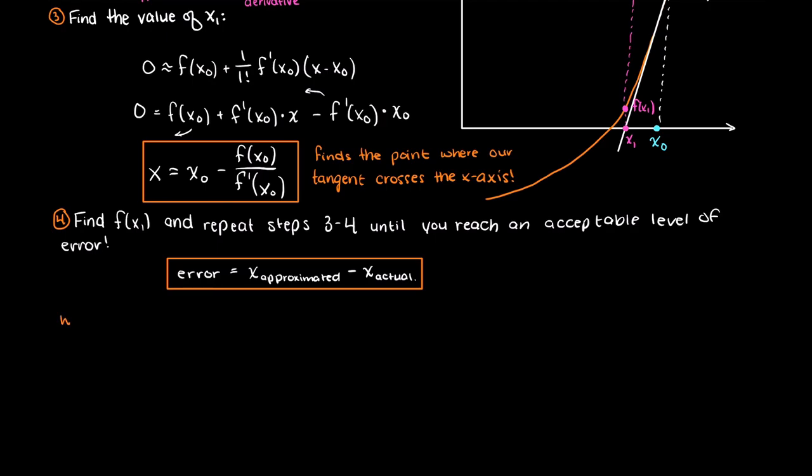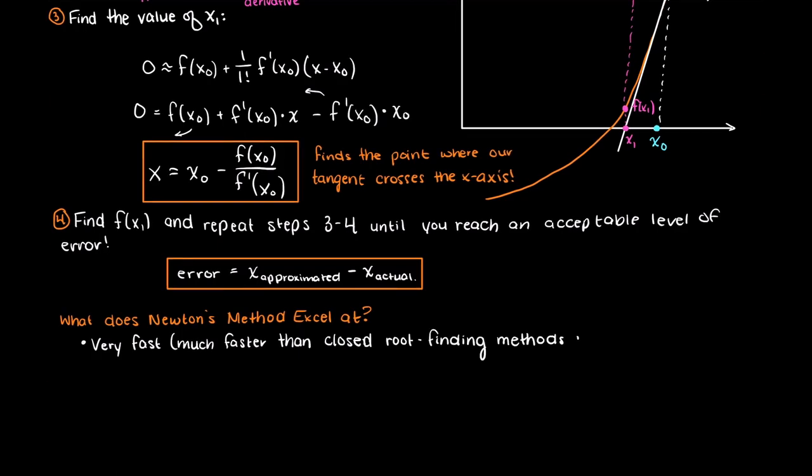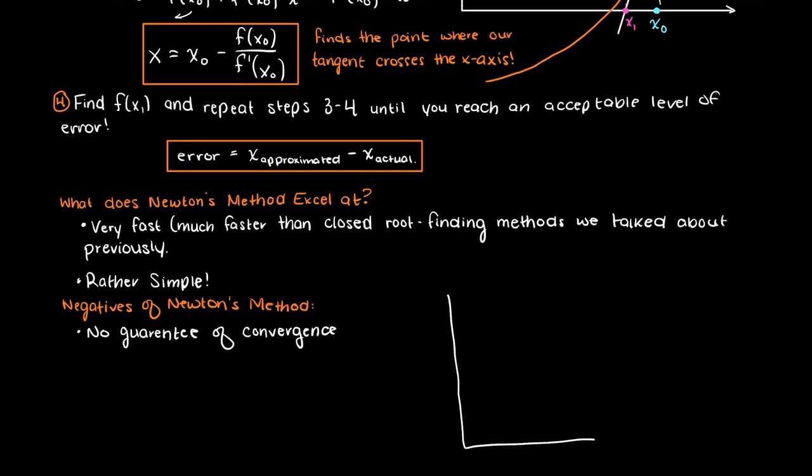So we should also talk about what Newton method excels at, and what can cause Newton's method to fail. Newton's method is very fast at finding some roots, much faster than the closed-root finding methods that we talked about previously. However, there is no guarantee that Newton's method won't diverge.